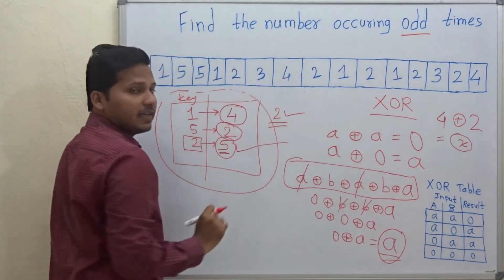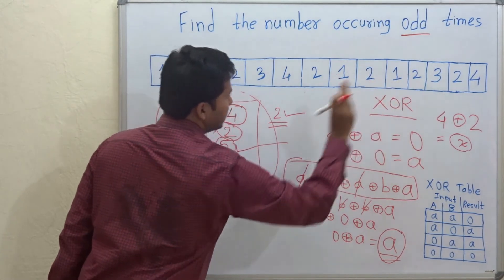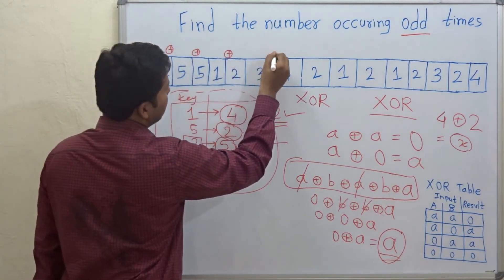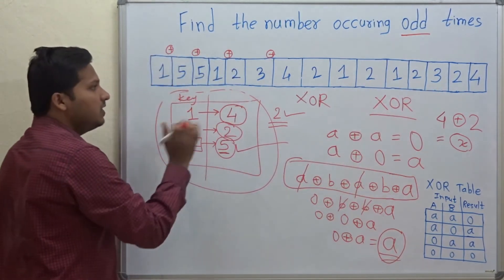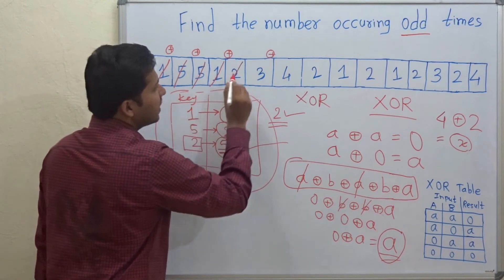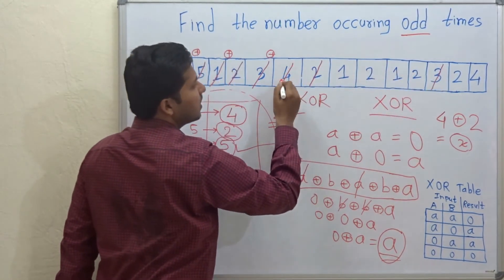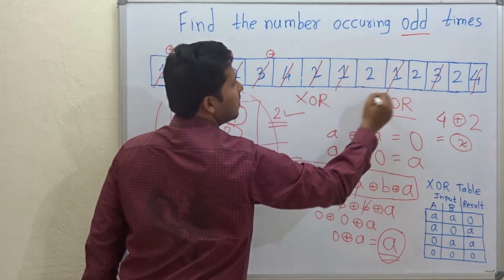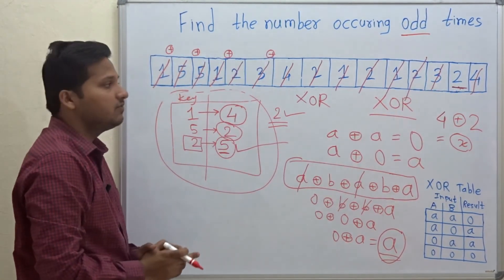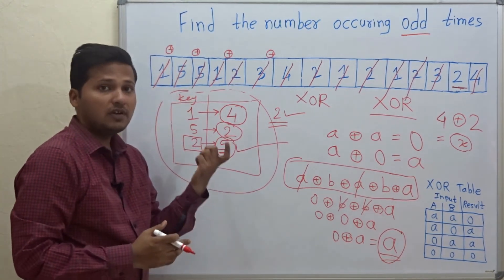So let's apply this to the example array. We XOR all the elements. Then 1 cancels with 1, 5 cancels with 5, 2 cancels with 2, 3 cancels with 3, 4 cancels with 4, 1 cancels, 2 cancels — and the last remaining 2 does not cancel with anyone. The element that remains is the one occurring an odd number of times in the array.